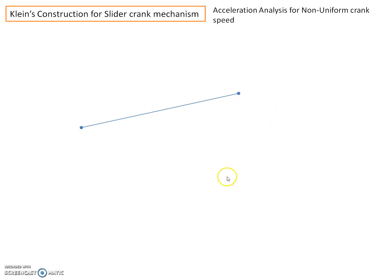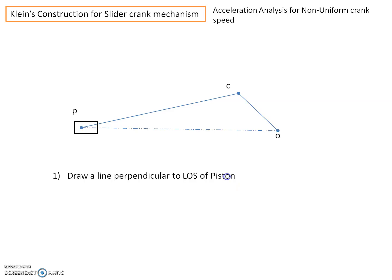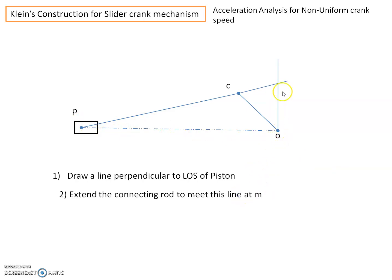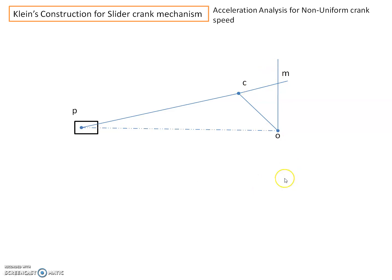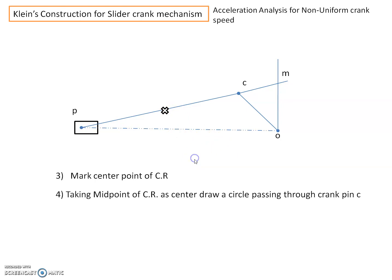Once the velocity polygon is completed, we proceed for acceleration analysis. Draw the configuration diagram to a suitable scale, then complete the velocity polygon: draw a line perpendicular to the line of stroke at point O, extend the connecting rod to meet this perpendicular at M - OCM represents the velocity polygon. For the acceleration polygon, identify the midpoint of connecting rod PC and, taking this midpoint as the center, draw a circle.